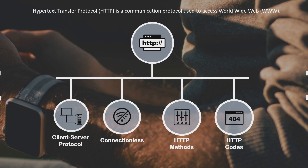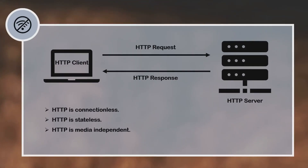The next feature of HTTP is that it is connectionless. Whenever an HTTP client wants to access a web application, it sends out an HTTP request to the server. The server processes it and responds back to the client. Once this process is completed, the connection gets terminated. If the HTTP client wants to access the same web application again, it has to start from scratch — send another HTTP request, the server processes it and responds back, and again the connection gets terminated. Because of this, HTTP is connectionless.